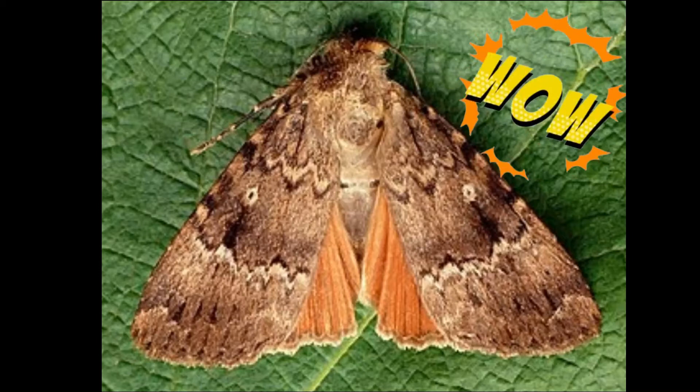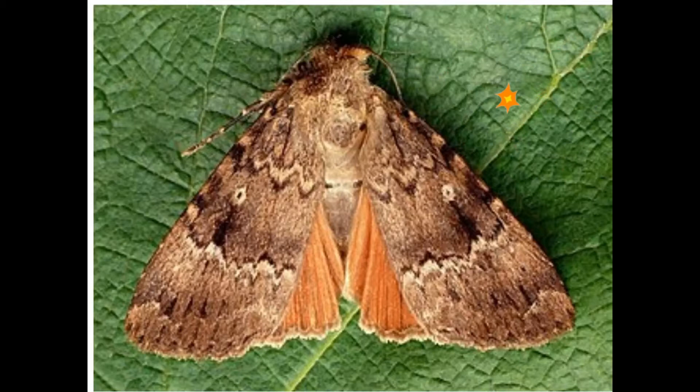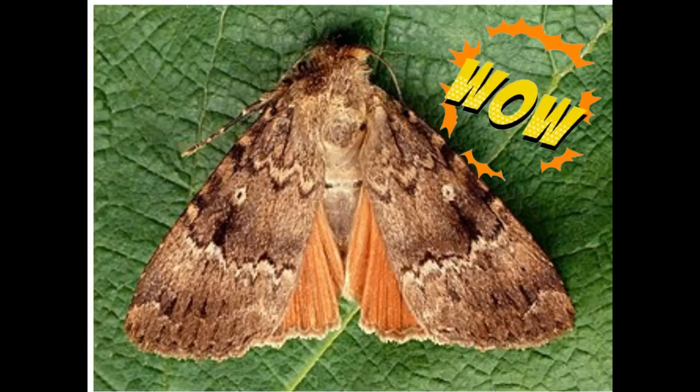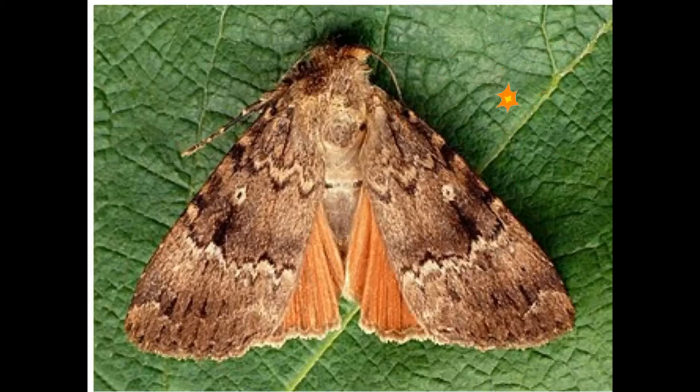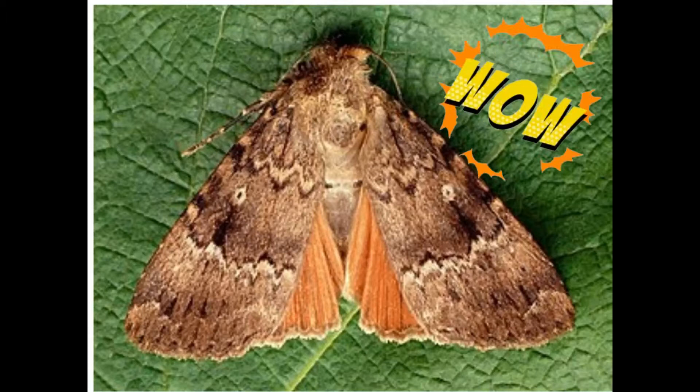The copper underwing moth is a species of moth that was first described by Carl von Linnaeus in his 1758 10th edition of Systema Naturae. Wait a minute — I've heard of Carl von Linnaeus. His portrait is in Hyde House in the dining room. Let's head there and find out more.